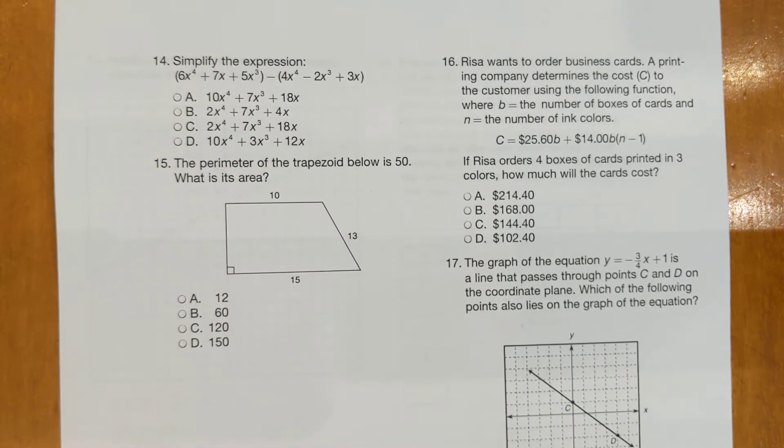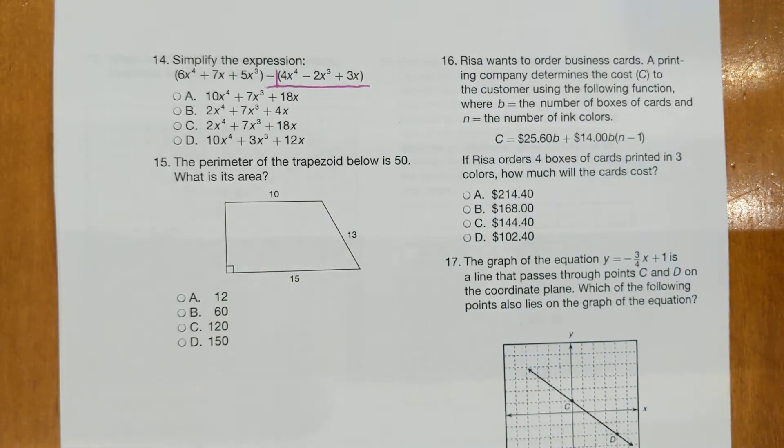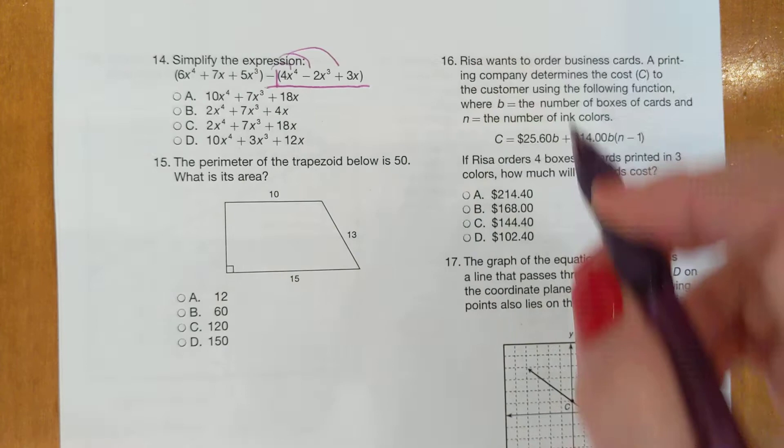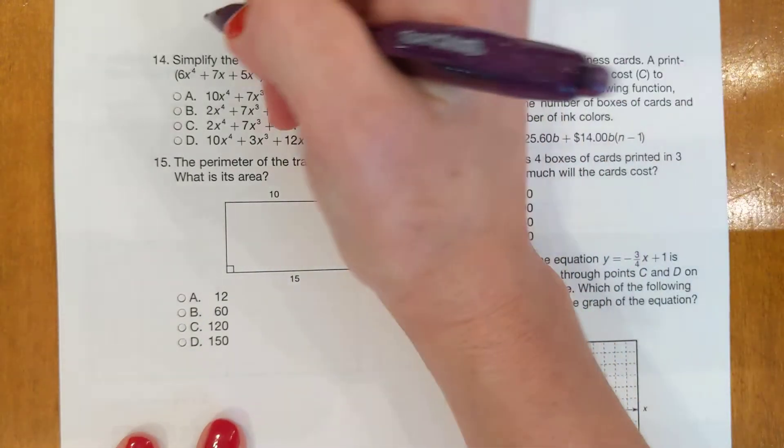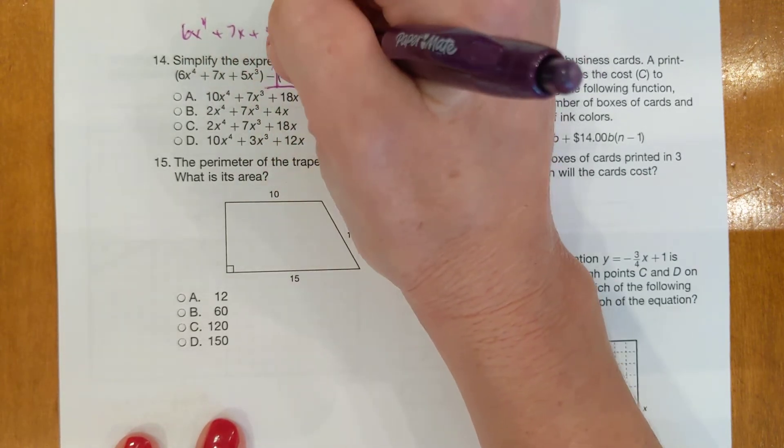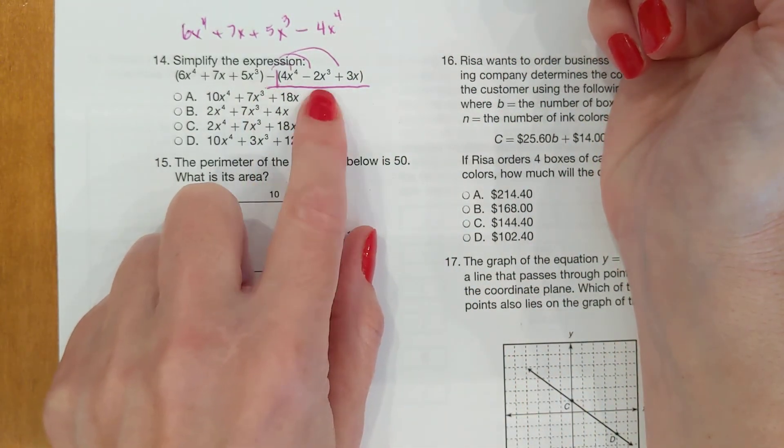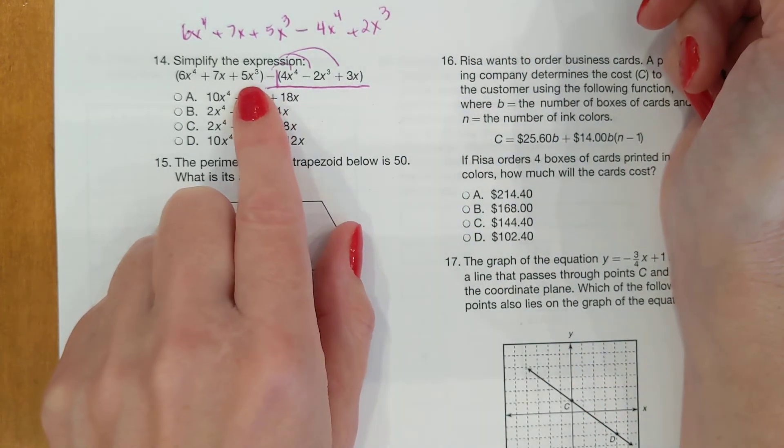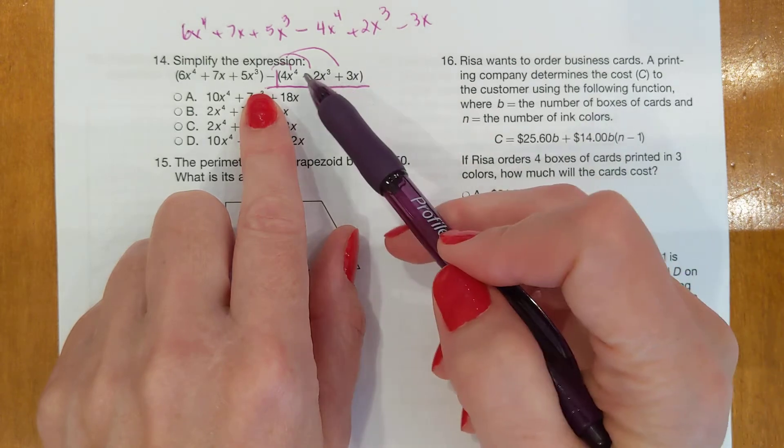Number 14, simplify the expression: 6x to the 4th plus 7x plus 5x cubed minus (4x to the 4th minus 2x cubed plus 3x). I would take the time to distribute the negative across that parenthesis. It's like there's a negative 1 there. So, rewrite it by multiplying them all by negative 1. And again, if you go in to take this test in person, they're going to give you whiteboards to use. So, you're going to have to rewrite the whole thing on the whiteboard. So, we got 6x to the 4th plus 7x plus 5x cubed minus 4x to the 4th - negative 1 times 4 is minus 4. Negative times a negative makes that plus 2x cubed. And then minus times a plus makes minus 3x. Everything changed signs because it was minus all of it. So, that becomes minus, plus, and then that's negative.